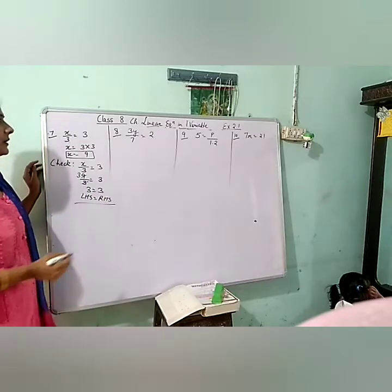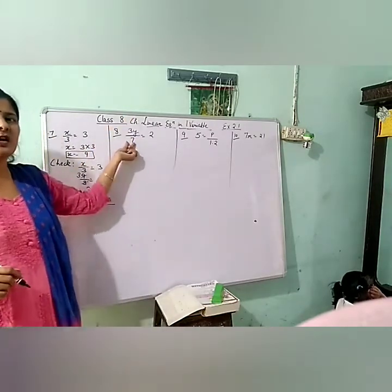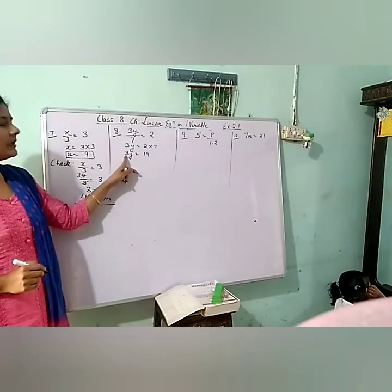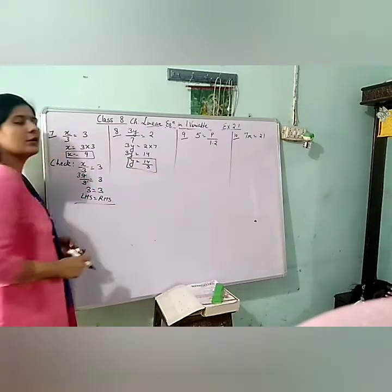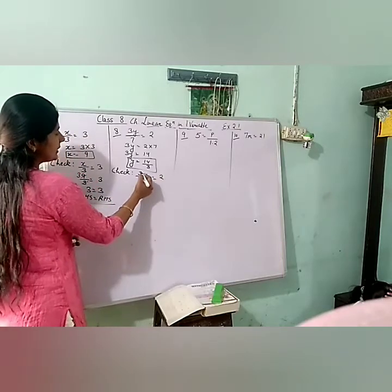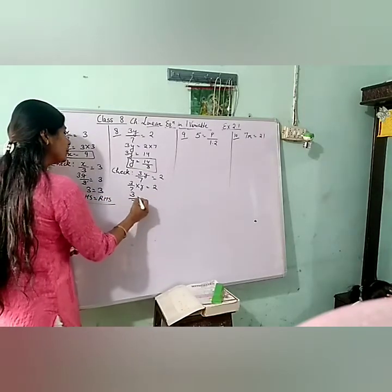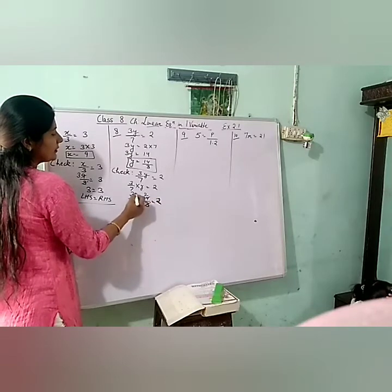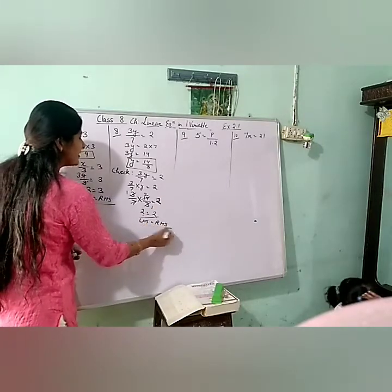8th part: 3y by 7 equals 2. First, 7 is in division, so transposing gives 3y equals 2 into 7, so 3y equals 14. Now 3 is in multiplication, so it goes to division: y equals 14 by 3. Checking: 3 by 7 into y, substituting 14 by 3, we get 3 by 7 into 14 by 3 equals 2 — simplifying, 2 equals 2. LHS equals RHS, hence verified.